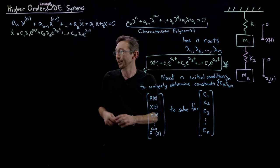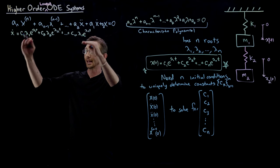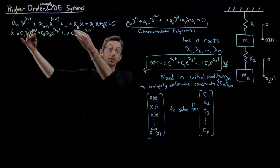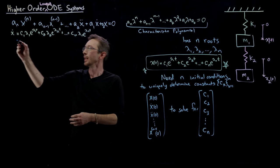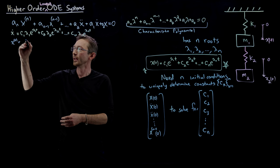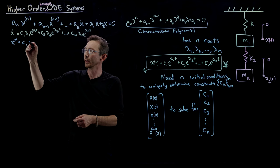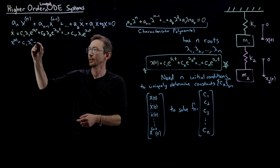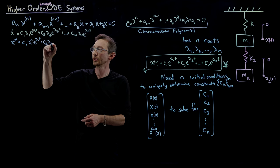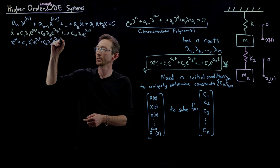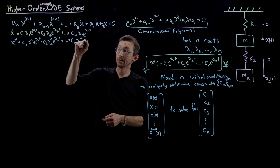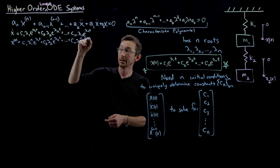And I'm going to take a leap of faith and write down that the second derivative gives another power of λ₁, λ₂, and λₙ; the third derivative gives another power. So the nth derivative is just c₁ λ₁ⁿ e^(λ₁t) + c₂ λ₂ⁿ e^(λ₂t) + ... + cₙ λₙⁿ e^(λₙt). No big deal — this is pretty straightforward.